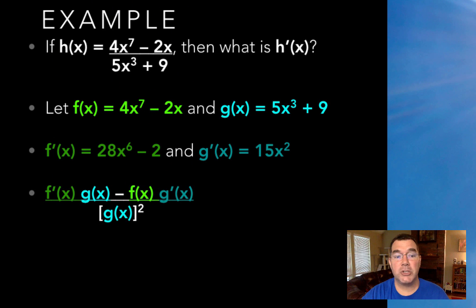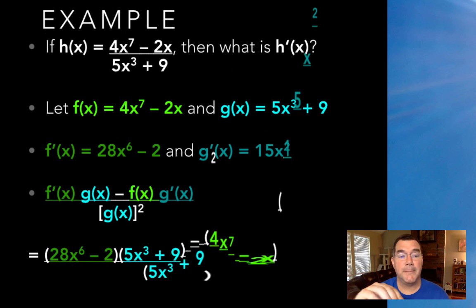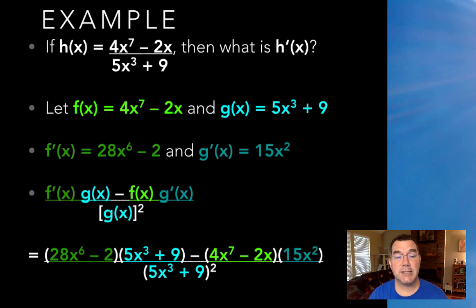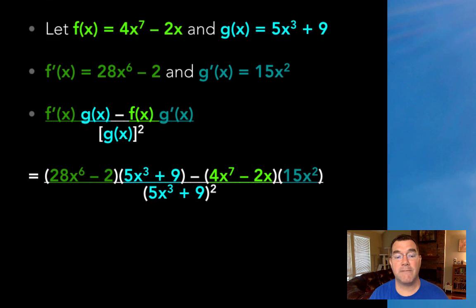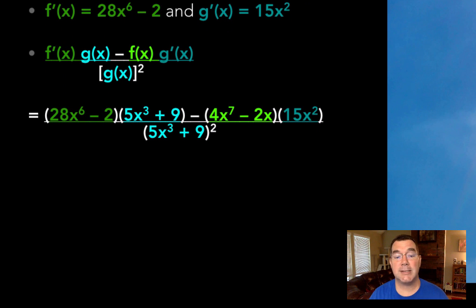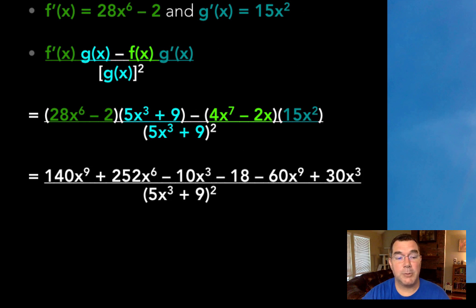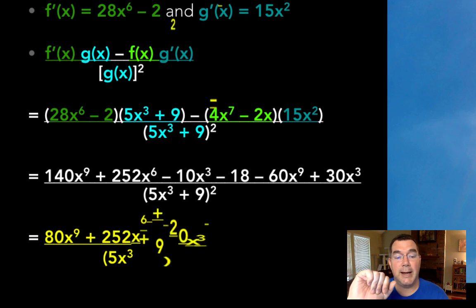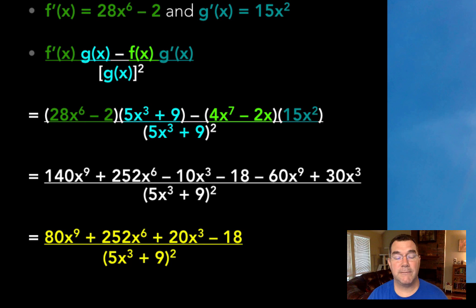So if I plug those functions and derivatives into the formula, I get 28x to the 6 minus 2 times 5x to the 3rd plus 9 minus 4x to the 7 minus 2x times 15x squared all over 5x to the 3rd plus 9 squared. And if I multiply it out, I get all of that. And if I simplify, that is what I would get for my final simplified answer.